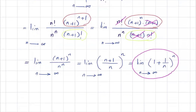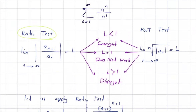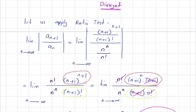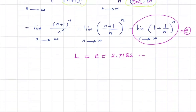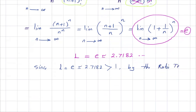This limit is e, the Napier number. As you remember, e can be approximated by 2.7182 and so on. This is your L. Going back to the ratio test: since L equals e, approximately 2.7182, which is more than 1, by the ratio test the series is divergent.